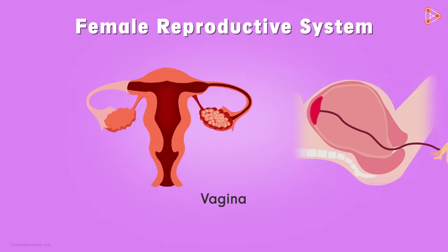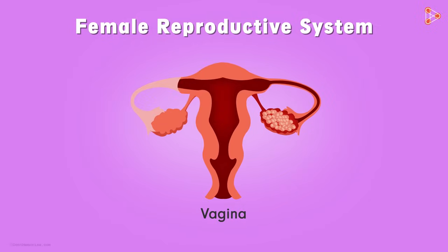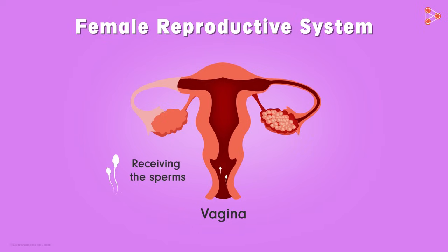The vagina is basically a small passage that opens to the exterior. It is the site where sperms are received in the female's body. On the other hand, the same passage is used for passing the baby out of the body during childbirth.